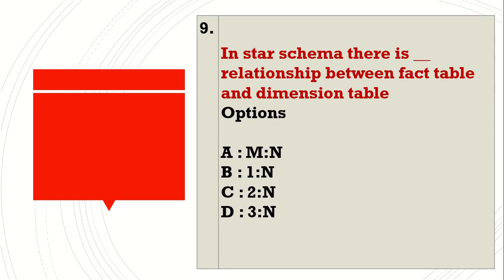In Star Schema, there is Dash relationship between Fact Table and Dimension Table. Options: A. M is to N, B. One is to N, C. Two is to N, D. Three is to N. Answer: B. One is to N.